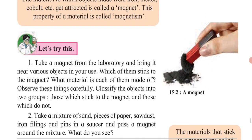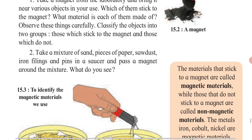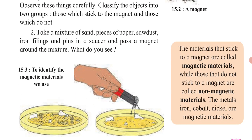You can see this experiment — when you take a magnet near iron filings, the iron filings get collected to the ends of the magnet. This is because of the magnetic force; the force exerted by the magnet is highest near the poles. We will study what these poles and magnetic fields are later. Now, what are magnetic materials and non-magnetic materials?